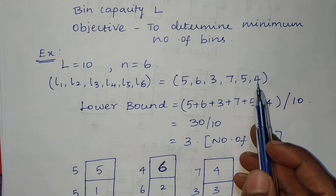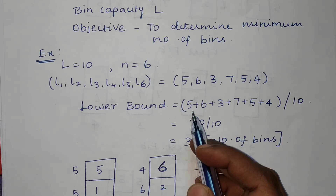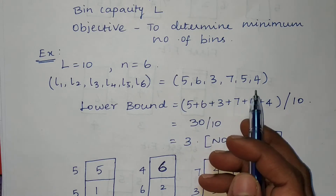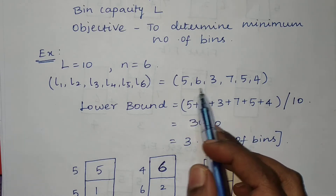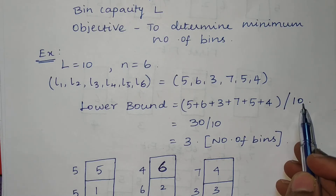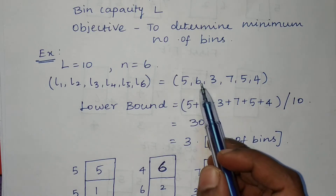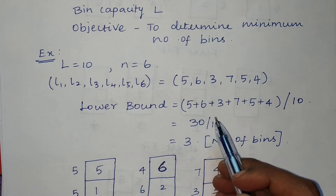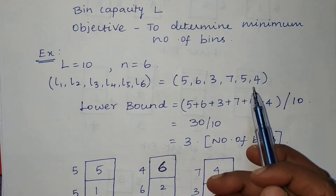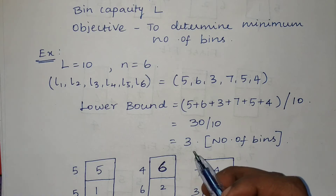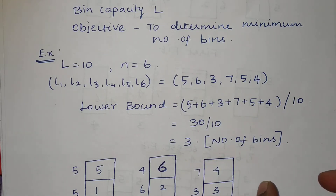First we need to find the lower bound value — approximately how many bins are required to fill all these objects. This is calculated by taking the summation of all object weights divided by the bin capacity of 10. The total weight is 30, and 30 divided by 10 equals 3, so we need at least 3 bins.